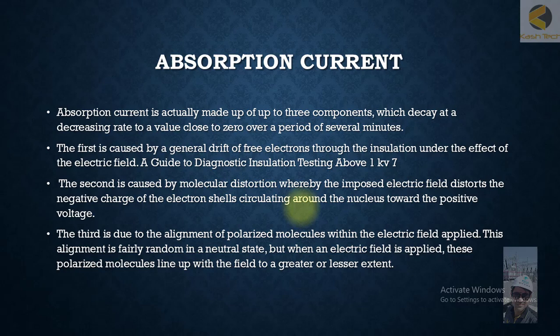Absorption current is actually made up of up to three components which decay at a decreasing rate to a value close to zero over a period of several minutes. So absorption current or polarizer current is also sum of three currents.